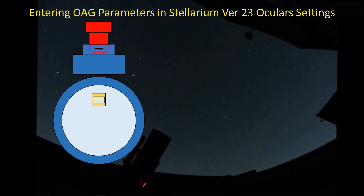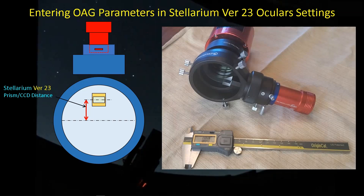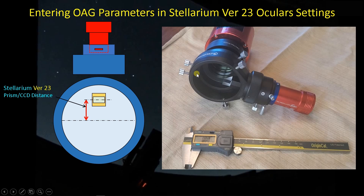Where do we get those measurements from? What Stellarium is asking us to do is measure from the center of the field of view of our telescope — where there's nothing to hold calipers on — up to the center of the prism, where there's also nothing to hold on. The one thing you can do is pull out your calipers, probably one of the most useful tools in our arsenal as astrophotographers, and go over to your off-axis guider, measure the diameter of the opening, and then measure from the bottom of the prism down to the bottom of the opening. That gives us the distance between the center of the optical axis and the center of the prism. Let's take a look at the measurements I made with my Celestron off-axis guider.